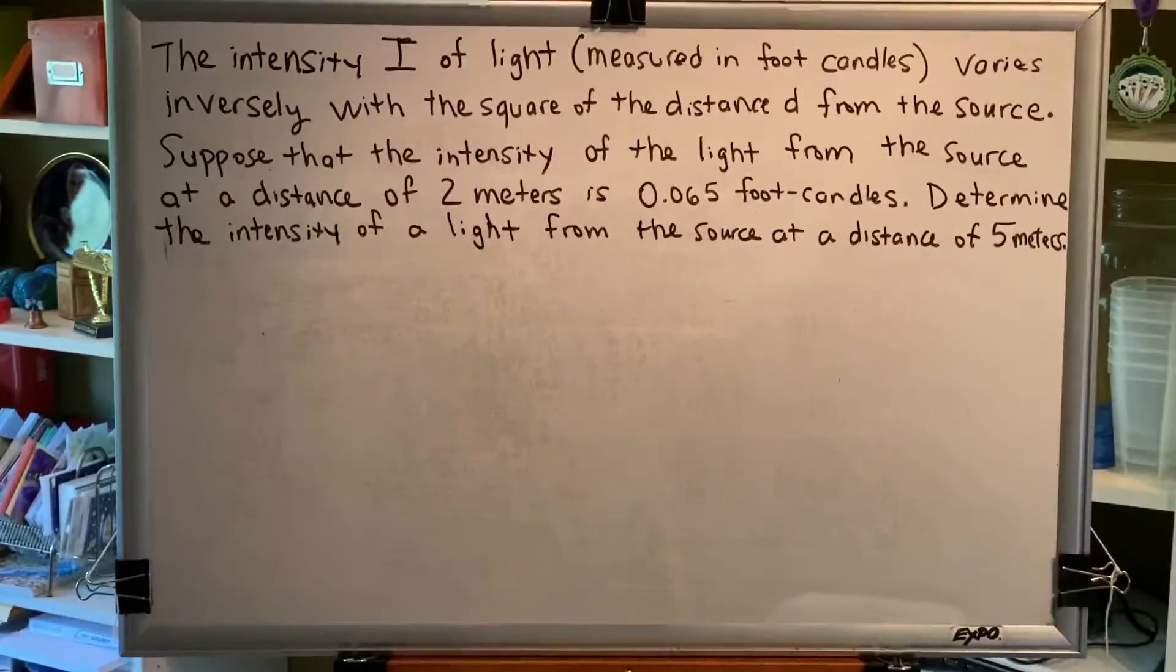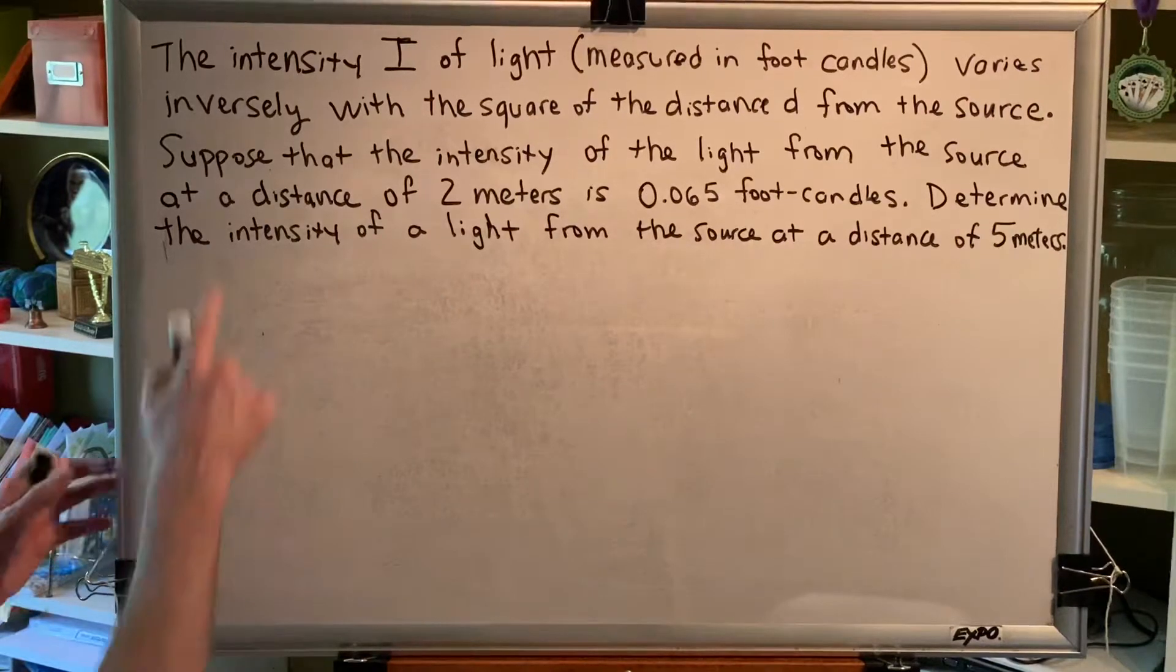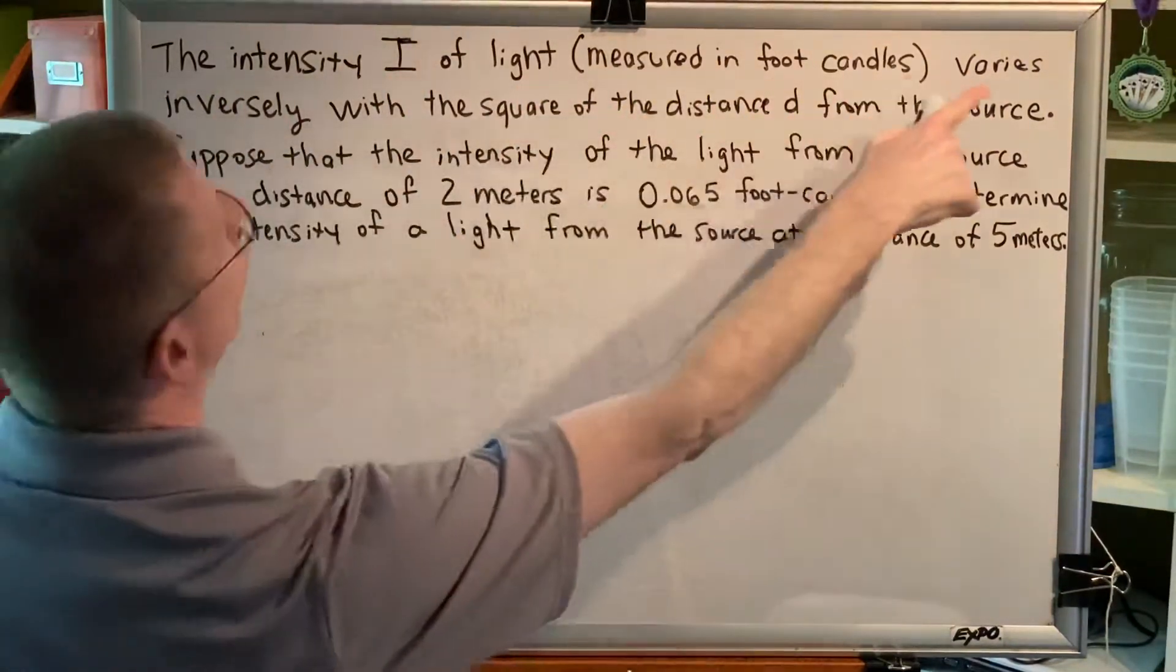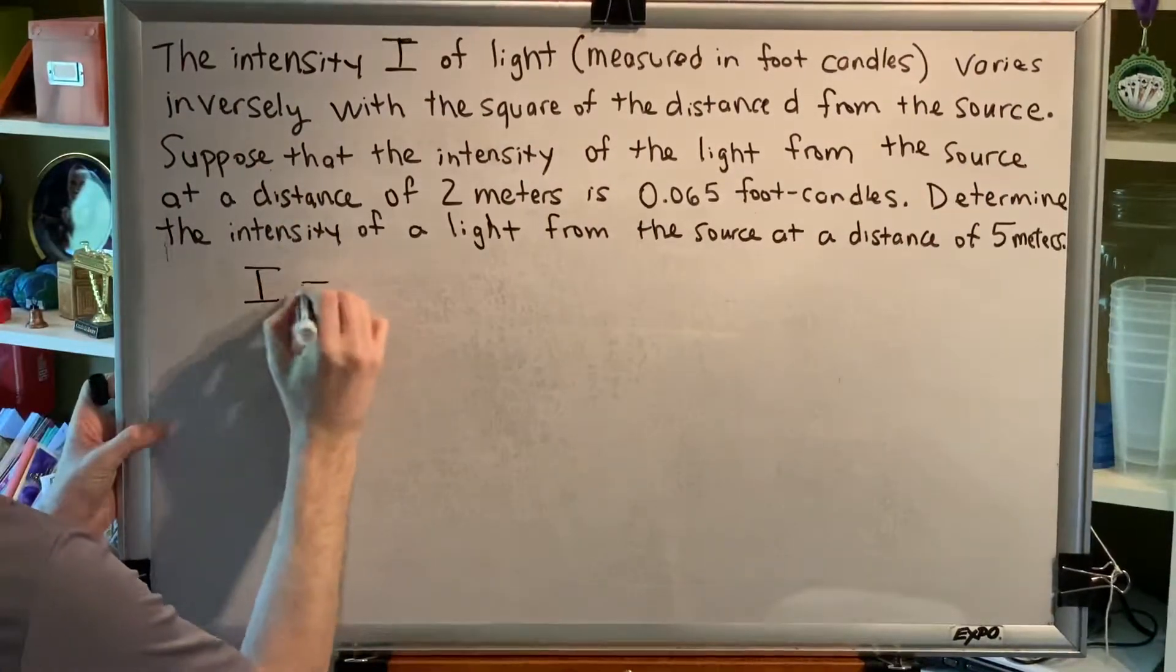We're going to go through the steps together. Only this time, because we're being asked to predict the future, we'll need all six steps. Step 1: Write the quantity or expression that varies followed by an equal sign. Well, this says the intensity I of light varies. I varies. So, I'll start with I equals.